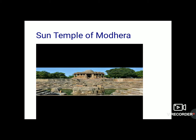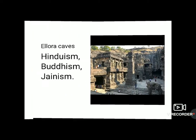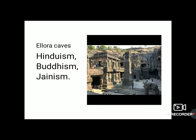After this architecture of the temples, let's move towards the Ellora Caves of the Deccan — the Ajanta and Ellora Caves. These represent three religions: Hinduism, Buddhism, and Jainism. One among these is the grand Kailash temple.